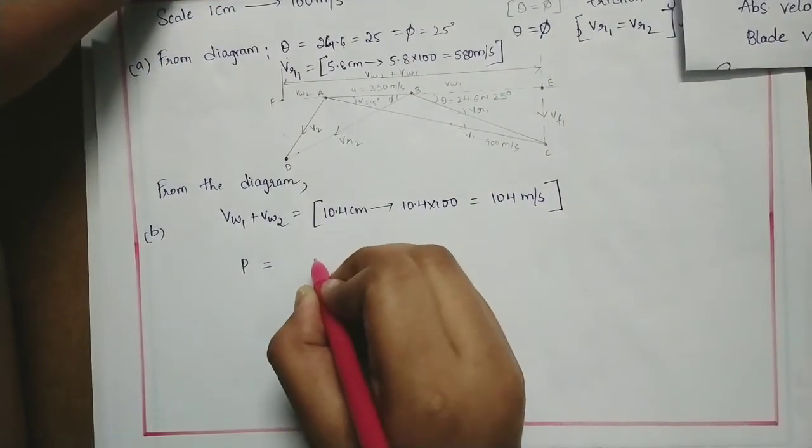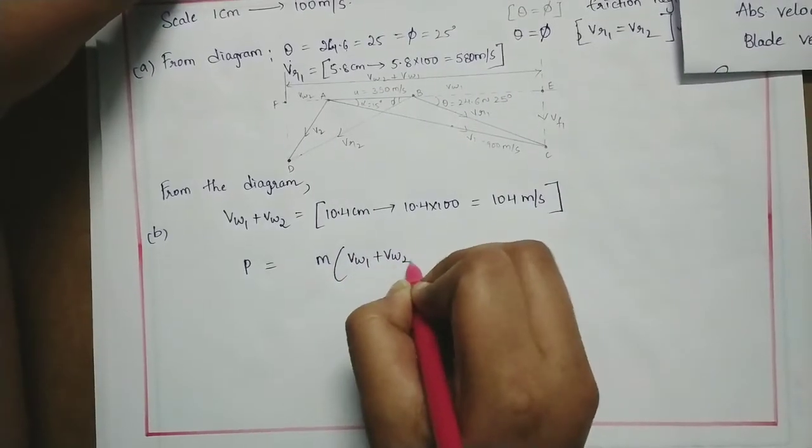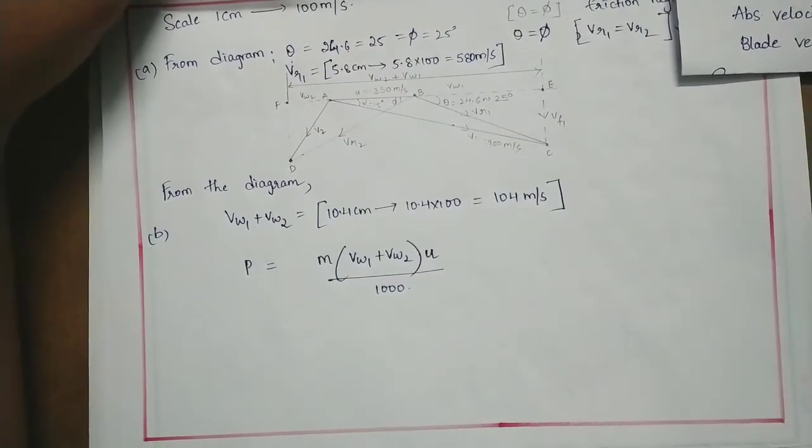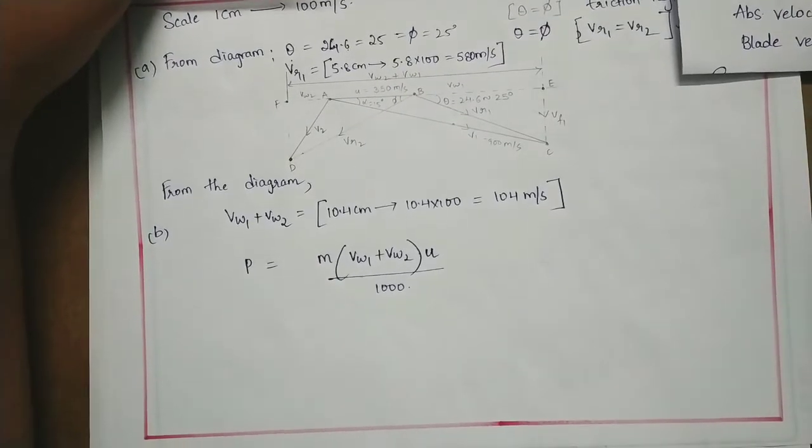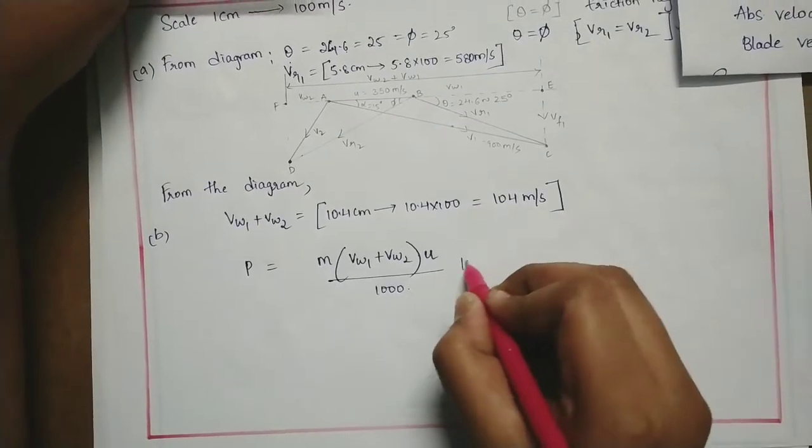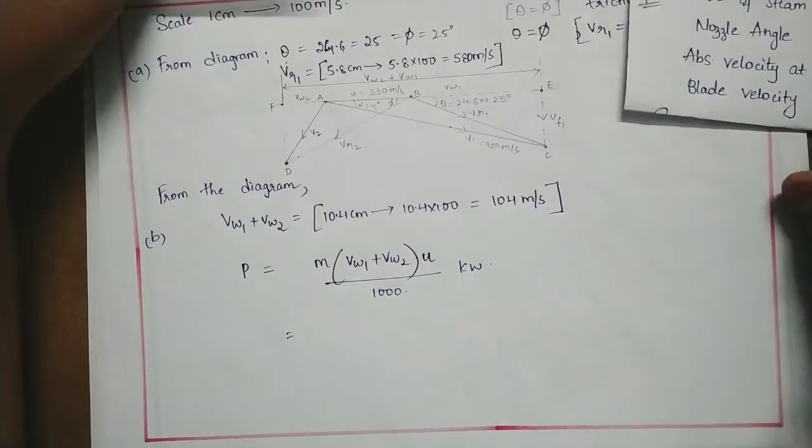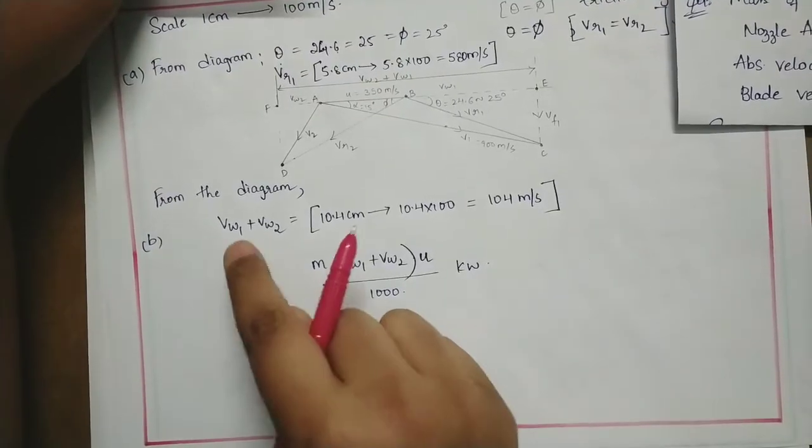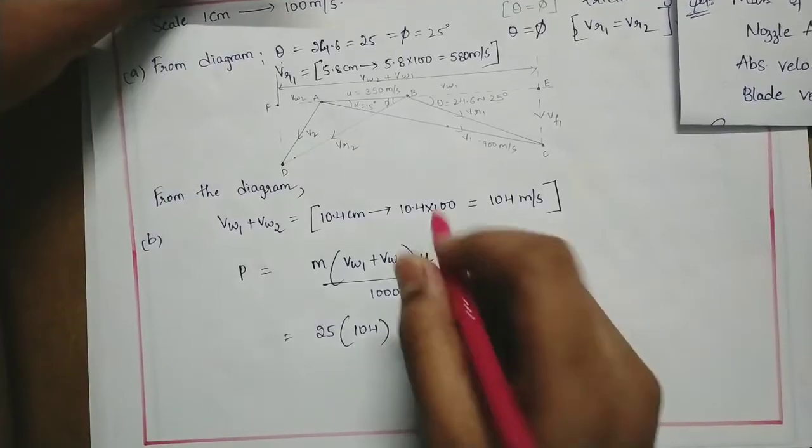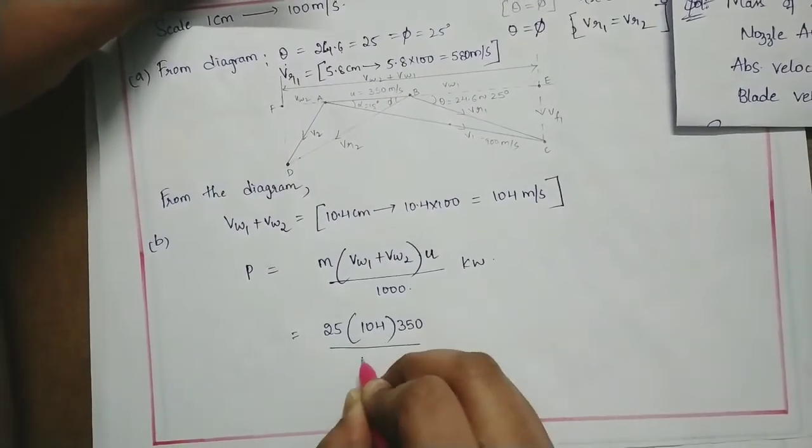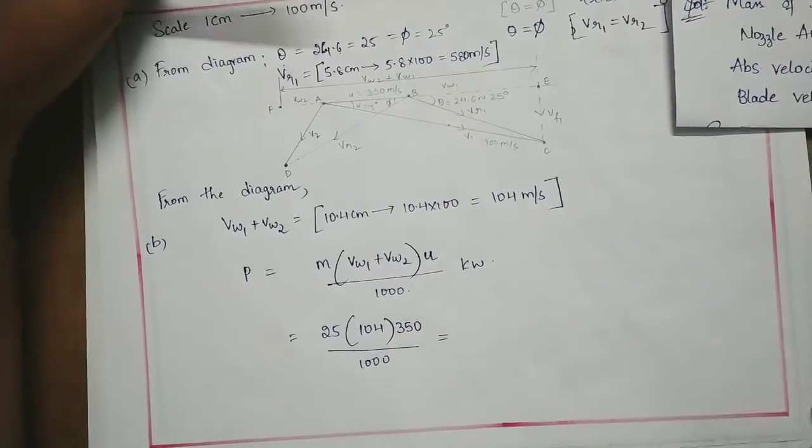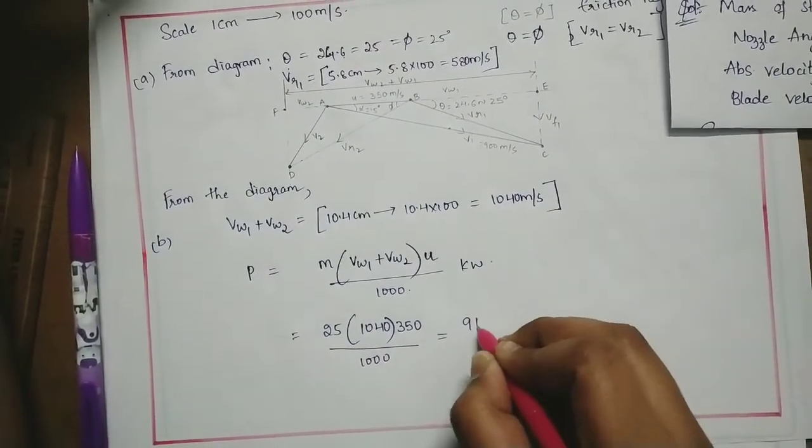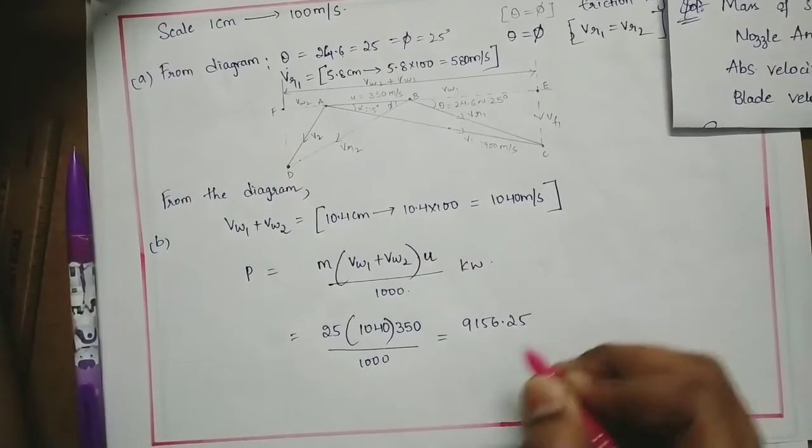Power developed P equals M times (Vw1 plus Vw2) times U divided by 1000 to get kilowatts. Substitute the values in the formula. The answer is 9156.25 kilowatts.